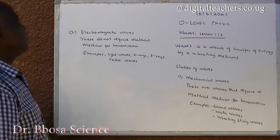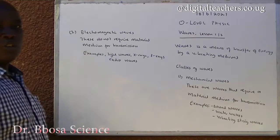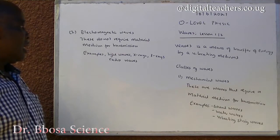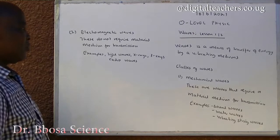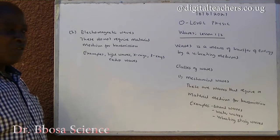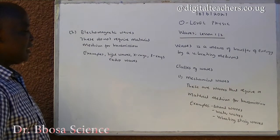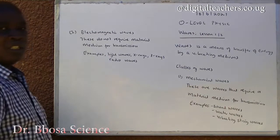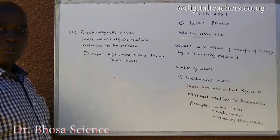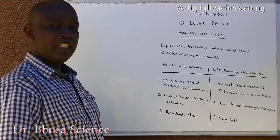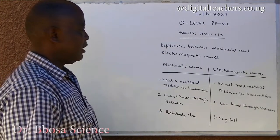Two: electromagnetic waves. These don't require material medium for transmission. Examples include light waves, x-rays, gamma rays, radio waves, ultraviolet waves, and so on.